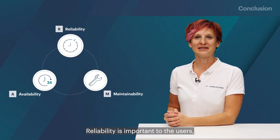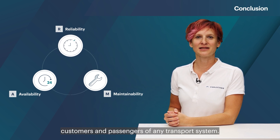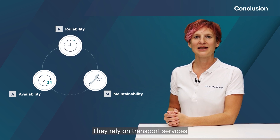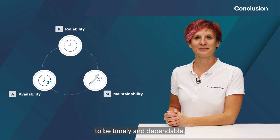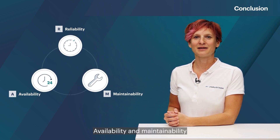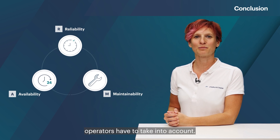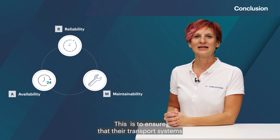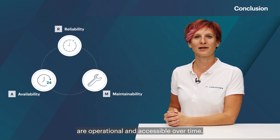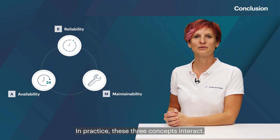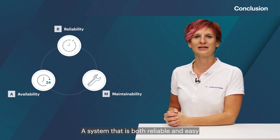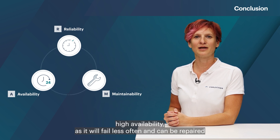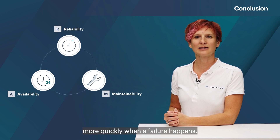Reliability is important to the users, customers and passengers of any transport system. They rely on transport services to be timely and dependable. Availability and maintainability are key concepts which operators have to take into account, to ensure that their transport systems are operational and accessible over time. In practice, these three concepts interact: a system that is both reliable and easy to maintain will tend to have high availability, as it will fail less often and can be repaired more quickly when a failure happens.